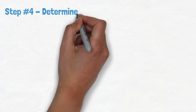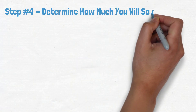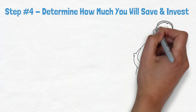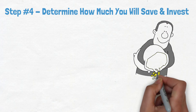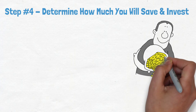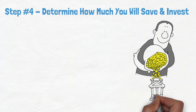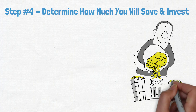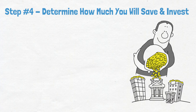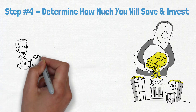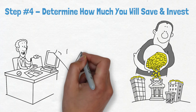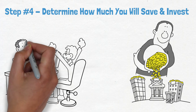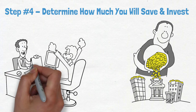Step number four: determine how much you will save and invest. You may have already included this part in the previous step, but it's so important that it deserves its own section. The last step is to figure out how much you can afford to save and invest each month. This is important because it will determine how long it will take you to reach your goal and how much risk you can afford to take with your investments.